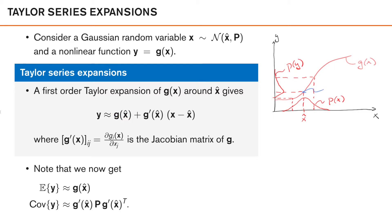The first-order Taylor expansion is g(x̂), which is the function value at the mean, plus the Jacobian of g evaluated at x̂ — which in the scalar case is just the slope of g at the mean — multiplied by (x - x̂). This part is zero at x̂, giving us a linear function. With this approximation of g, we can approximate p(y) as a Gaussian resulting from transforming x through this linear function, which is fairly close but not exactly p(y). This is our Gaussian approximation of p(y) using the linearized model.